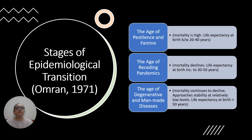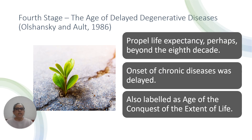Returning to the three stages given by Omran: the age of pestilence and famine, the age of receding pandemics, and the age of degenerative and man-made diseases. Some scholars proposed a fourth stage — Olshansky and Ault in 1986 proposed the age of delayed degenerative diseases, where the onset of chronic diseases gets delayed perhaps to the 70s or 80s and life expectancy goes beyond the eighth decade. This has also been labeled as the age of the conquest of the extent of life.